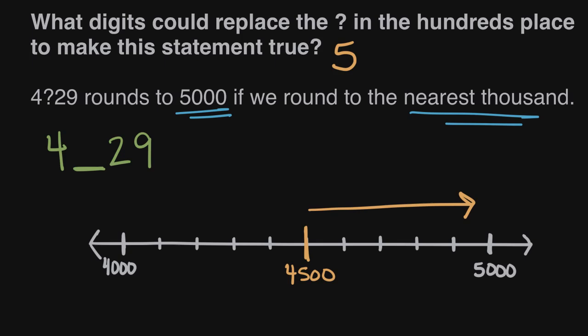So the digits that are five or greater are five, and then six, seven, eight, and nine. Those are the possible digits that we could fill into our hundreds place so that our number rounds to 5,000 as its nearest thousand. The solutions are five, six, seven, eight, and nine.